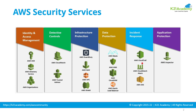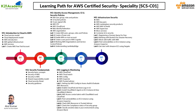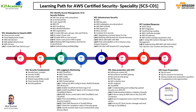That was our AWS cloud trainer and expert giving an overview of basic AWS security services — from identity and access management to detective controls, infrastructure protection, data protection, incident response, and application protection. This clip is from our step-by-step training program on AWS Certified Security Specialist, which covers nine modules, 100 plus lessons, 20 plus step-by-step hands-on labs, 300 plus sample exam questions, and one year of on-job support including CV preparation — all in an eight-week comprehensive program on AWS cloud security.